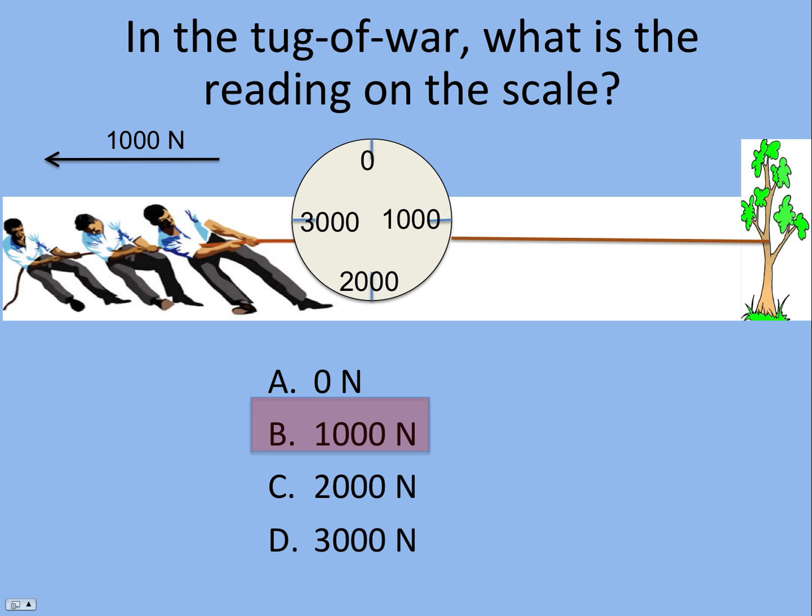If they don't pull at all, it's zero. They pull with 500, it's 500. Pull with a thousand, it's a thousand. There's no difference between the tree pulling to the right and the accountants. I mean, and the engineers, except maybe the pay scale, maybe it's a little steadier.